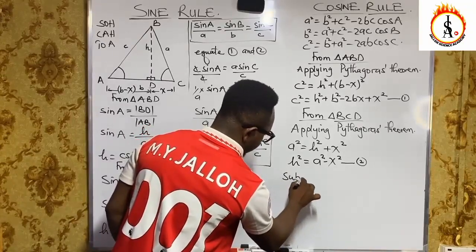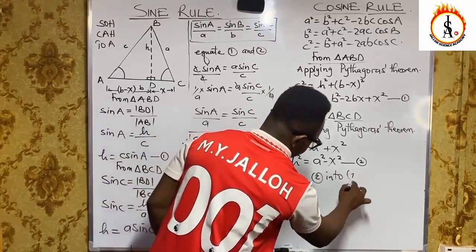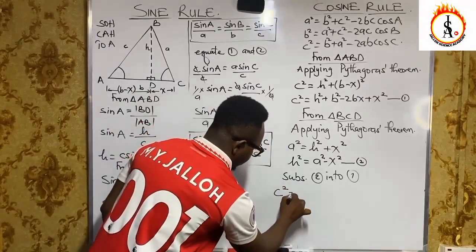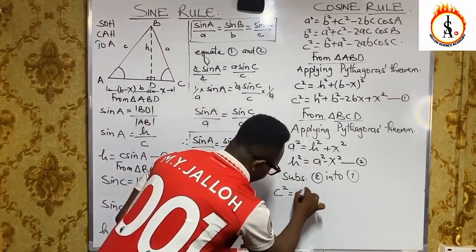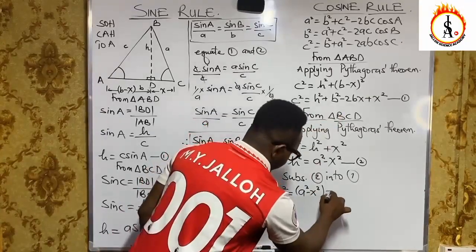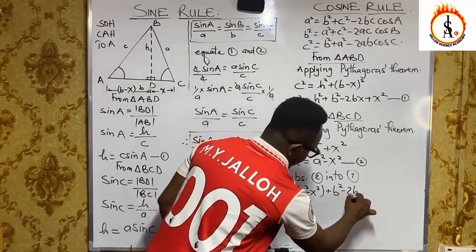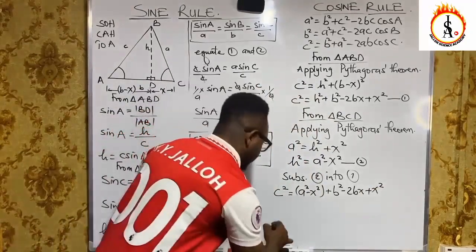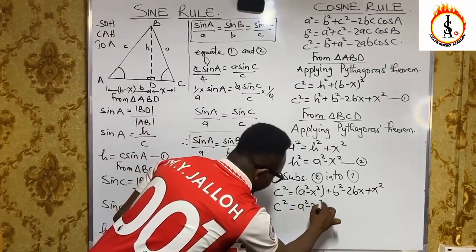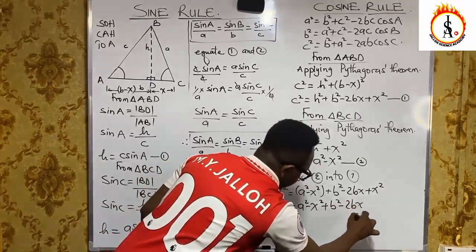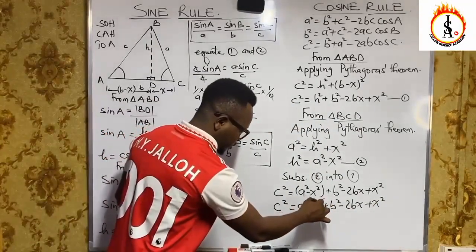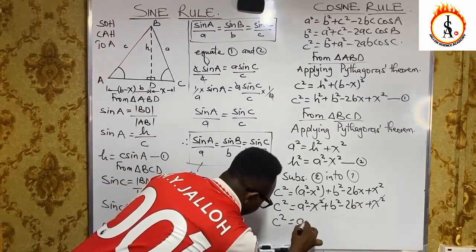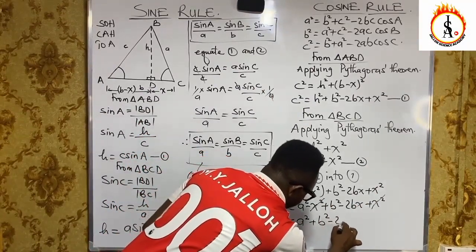We substitute equation 2 into equation 1. Our new equation becomes: c² = (a² − X²) + b² − 2bX + X². The negative X² and positive X² cancel, leaving us with c² = a² + b² − 2bX.